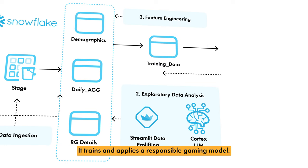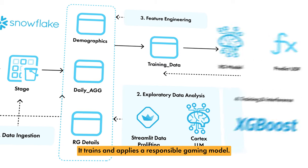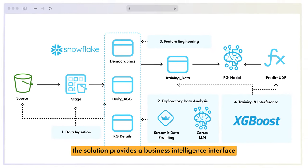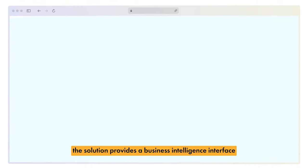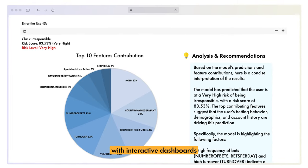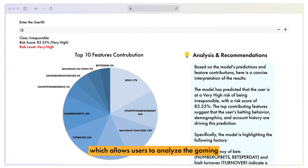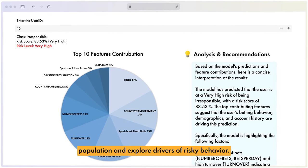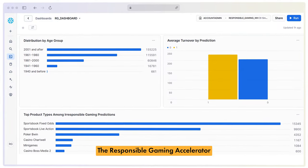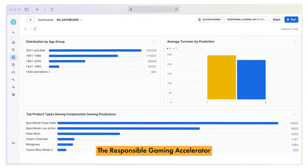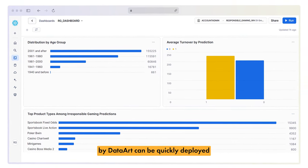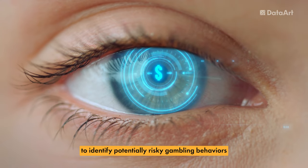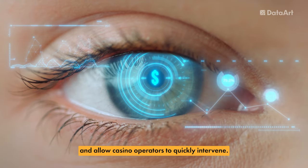It automates data preparation in Snowflake and trains and applies a responsible gaming model. Once the risk scores are calculated, the solution provides a business intelligence interface with interactive dashboards, which allows users to analyze the gaming population and explore drivers of risky behavior. The Responsible Gaming Accelerator can be quickly deployed to identify potentially risky gambling behaviors and allow casino operators to quickly intervene.